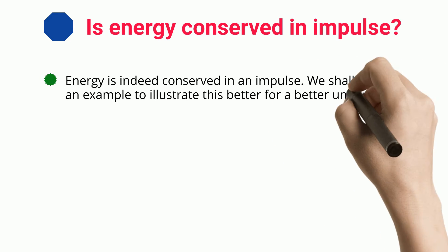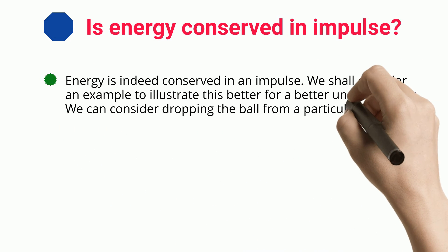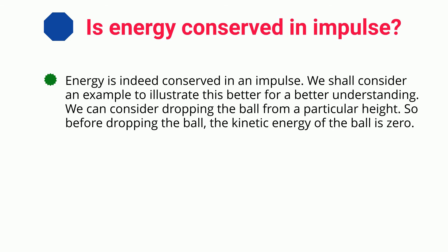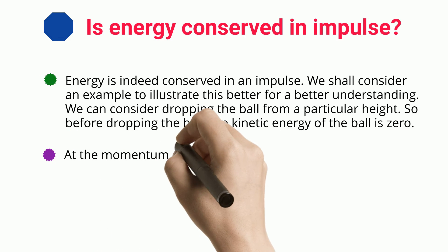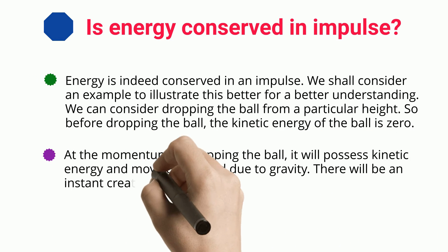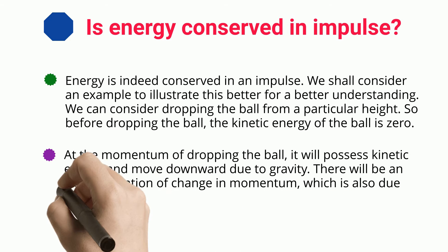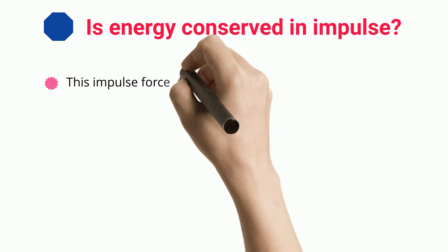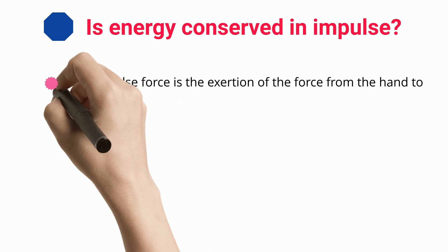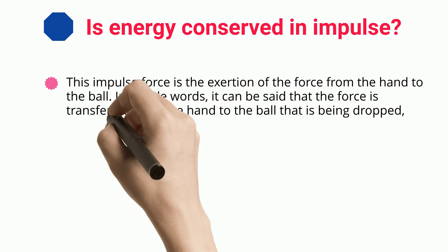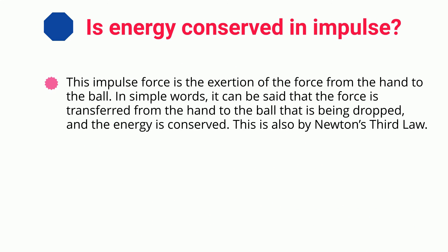We shall consider an example to illustrate this better. We can consider dropping a ball from a particular height. Before dropping the ball, the kinetic energy of the ball is zero. At the moment of dropping the ball, it will possess kinetic energy and move downward due to gravity. There will be an instant creation of change in momentum, which is also due to impulse force. This impulse force is the exertion of force from the hand to the ball. In simple words, the force is transferred from the hand to the ball that is being dropped, and the energy is conserved.